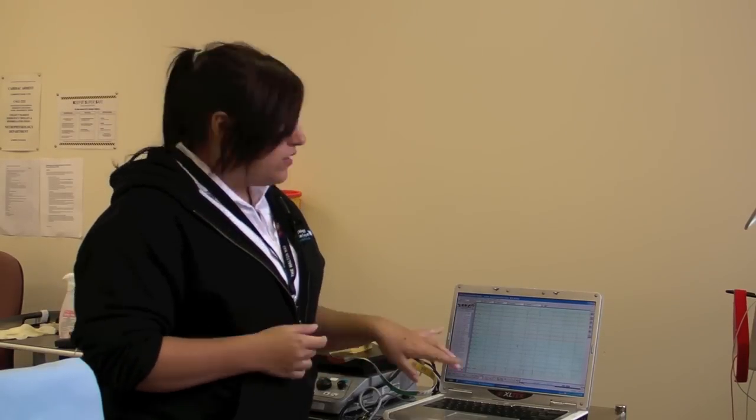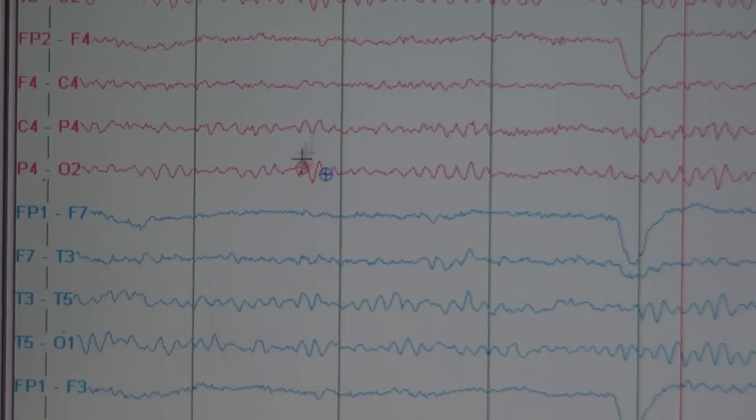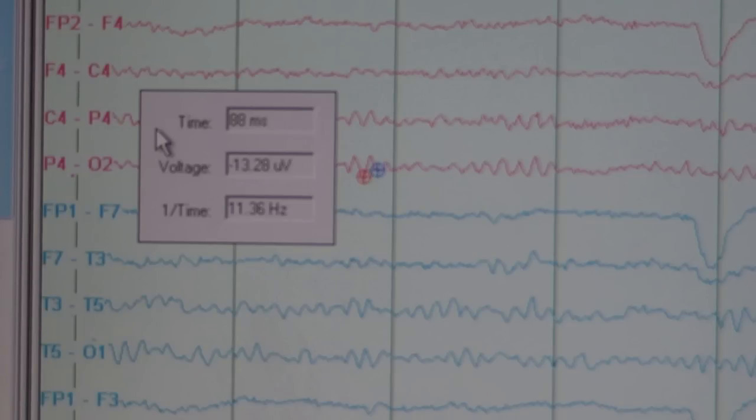The main things that we're looking for in EEG is frequencies. So we measure these waveforms, and the frequencies tell us if it's normal or not.